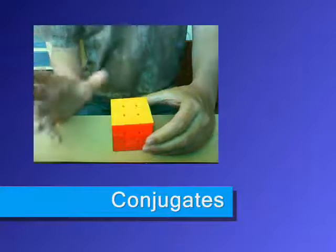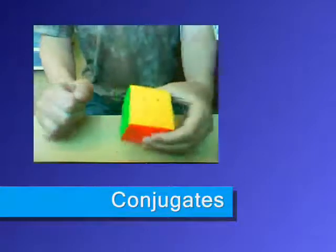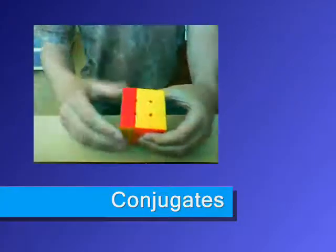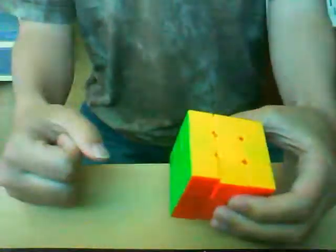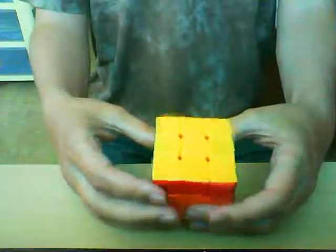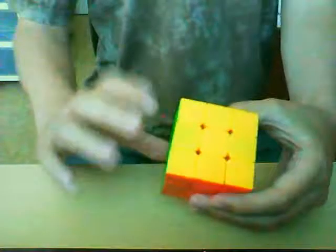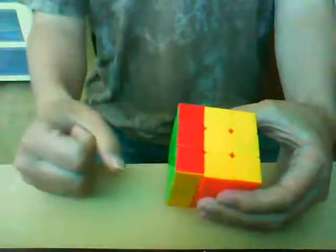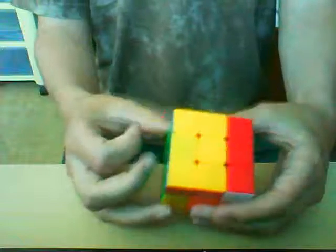Now we will talk briefly about conjugates. A conjugate consists in doing a first move before doing some move that will do something, then the inverse of the first move. For example, if we do a half turn, we can before that do a first move, then do the half turn, and then the inverse.